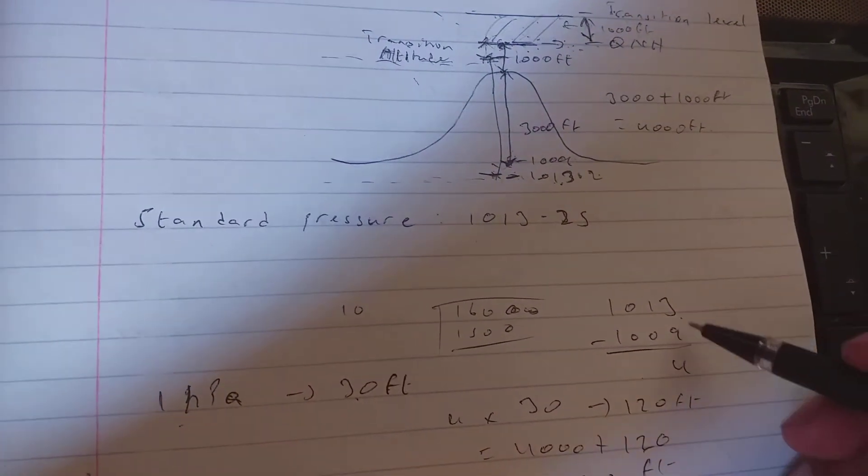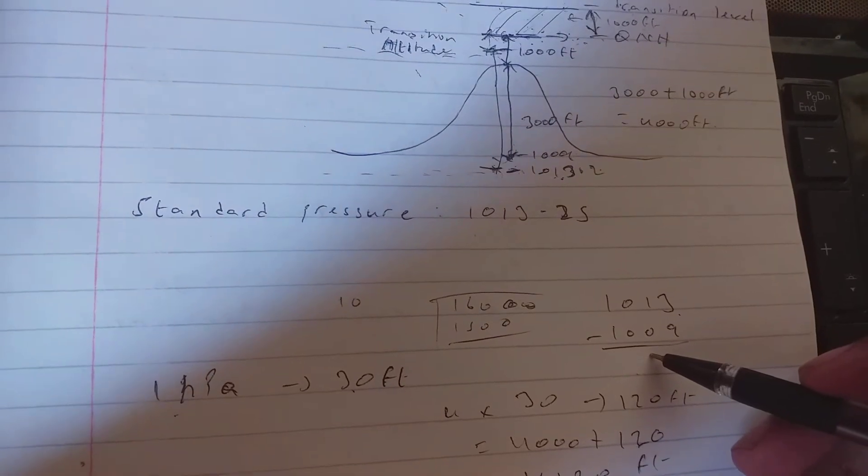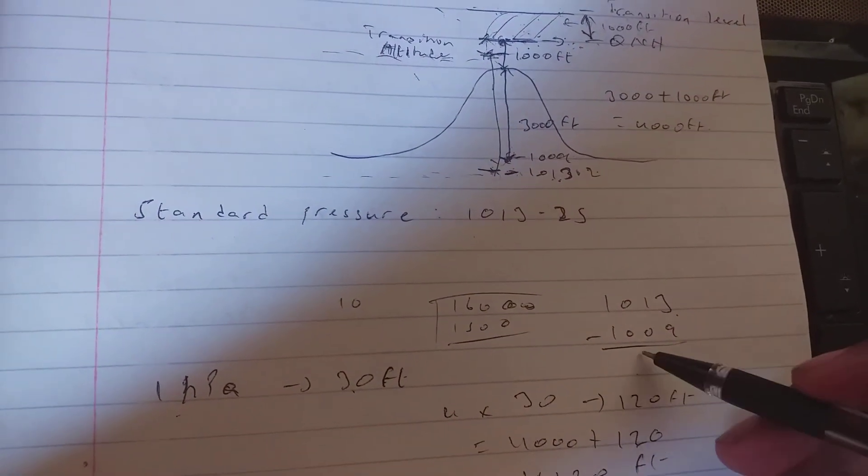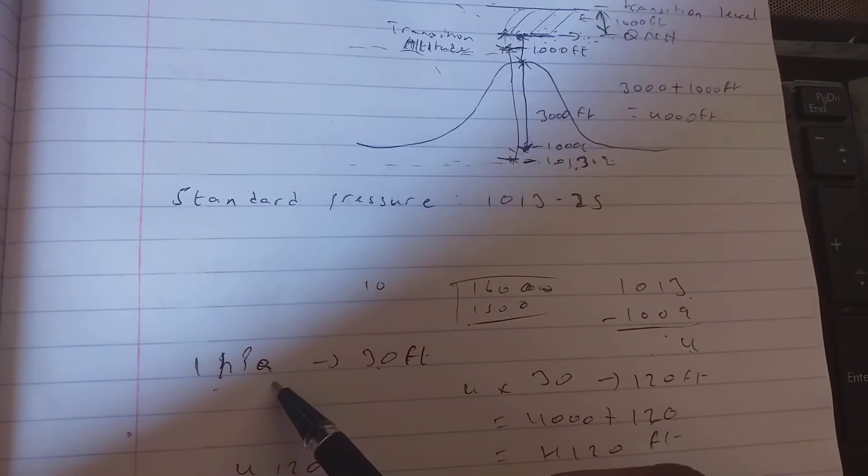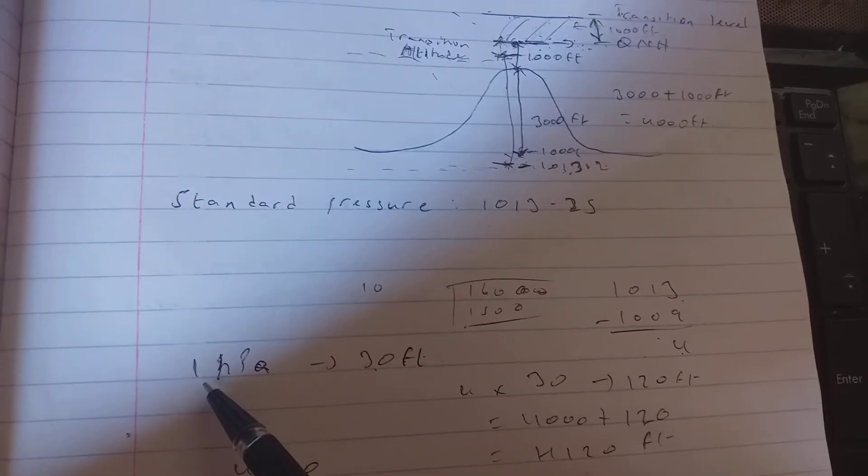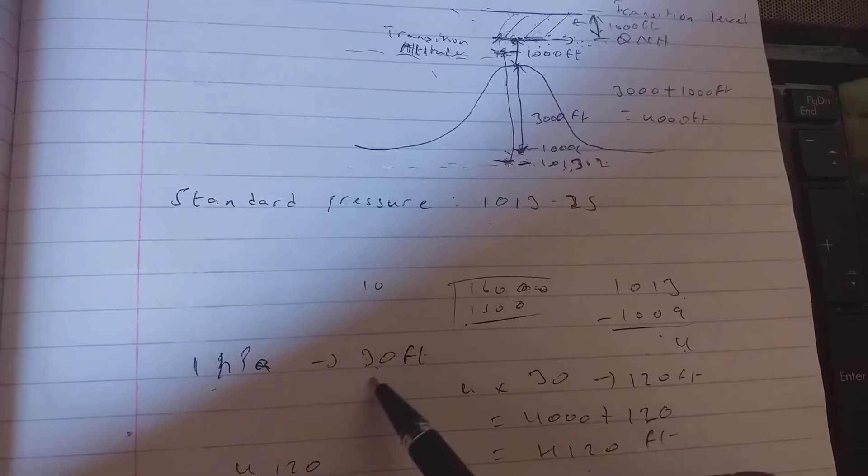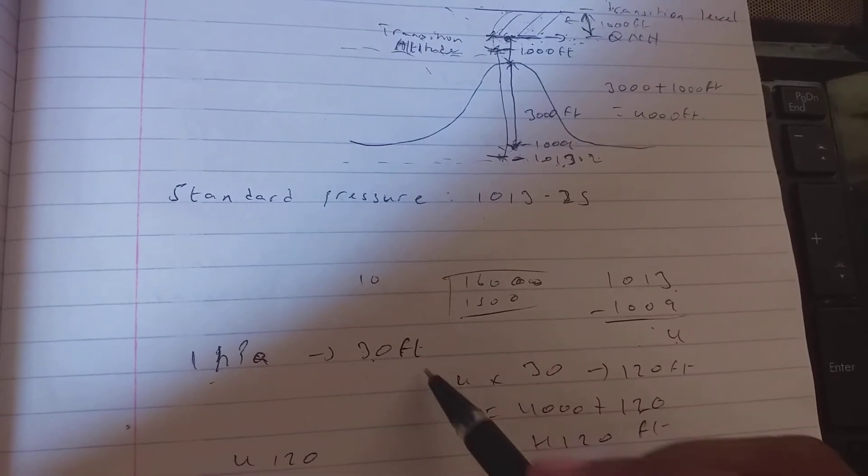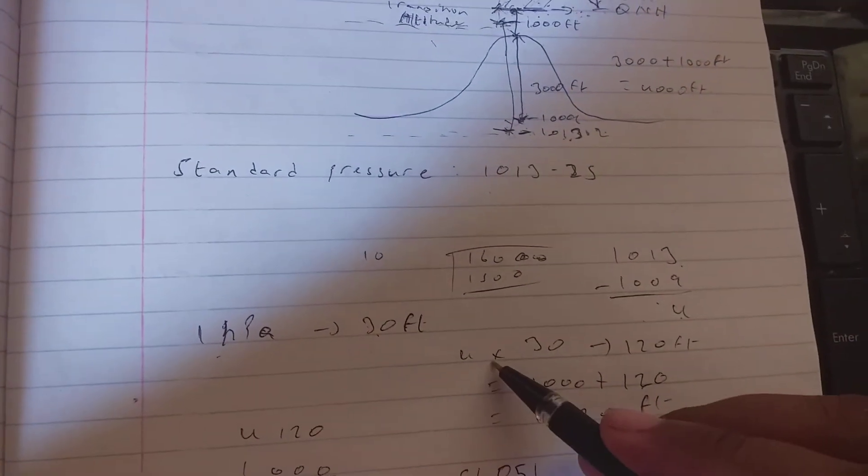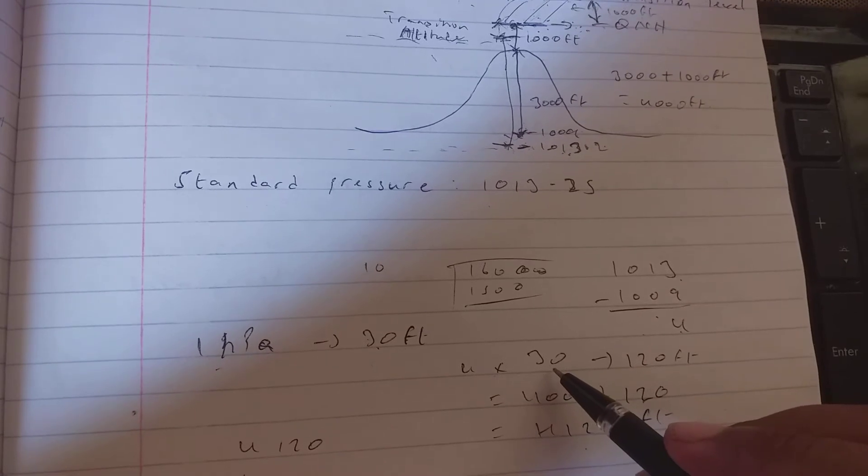We get 4. The relationship between pressure and height is that 1 hectopascal is equal to approximately 30 feet. So we just multiply that with 30 feet and we get 120 feet.